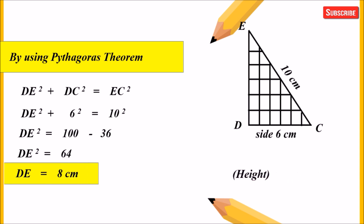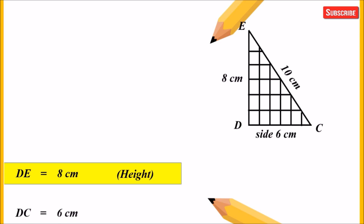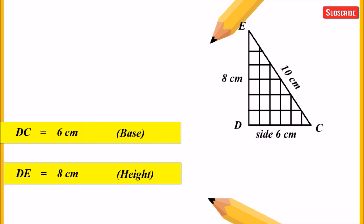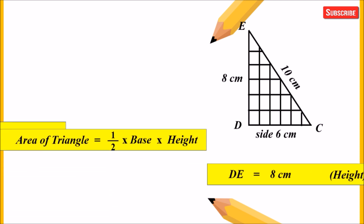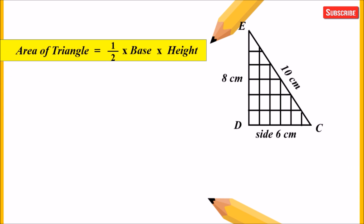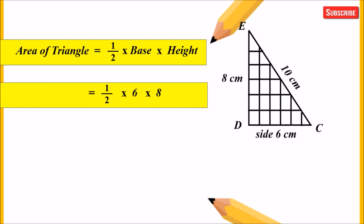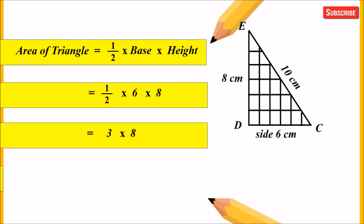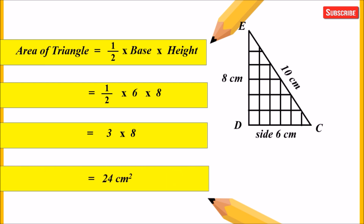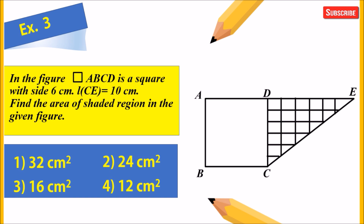Hence DE equals 8 centimeter, which we consider as the height of the triangle. DC equals 6 centimeter, which we consider as the base. Using the formula: area equals 1/2 into base into height — putting values, 1/2 into 6 into 8 — half of 6 is 3, so 3 into 8 equals 24 centimeter square. The second option, 24 centimeter square, is the correct answer. Thank you very much.